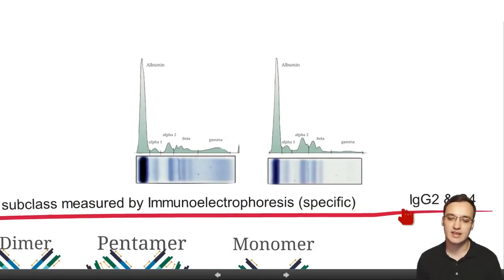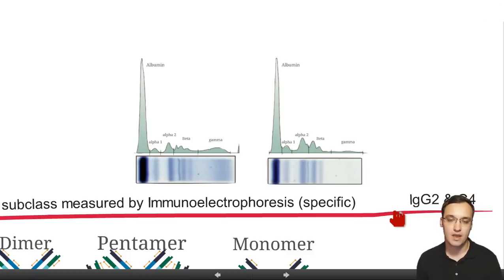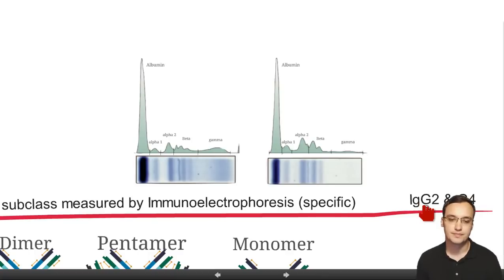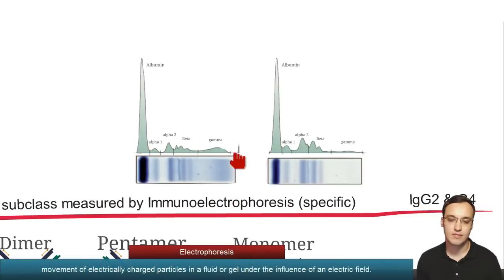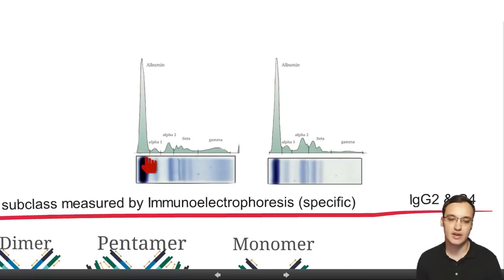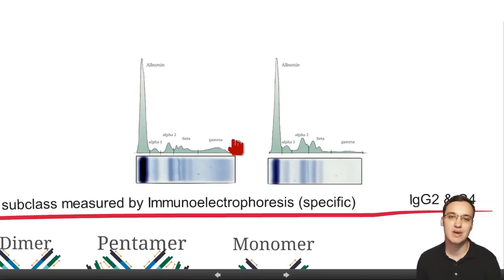If you have a deficiency in IgG2 or IgG4 — a subclass of IgG — together with an IgA deficiency, then you are particularly prone to infection. On electrophoresis, you can see bands — albumin is the strongest band — but we are concerned with the gamma globulin bands, since immunoglobulins are gamma globulins. In IgA-deficient patients, the gamma globulin band is decreased and the bluish color normally present is absent.